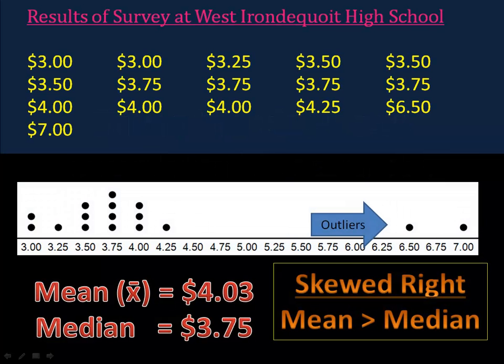In this example, we find that the mean is $4.03 and the median is $3.75. Notice we have two outliers, $6.50 and $7.00.